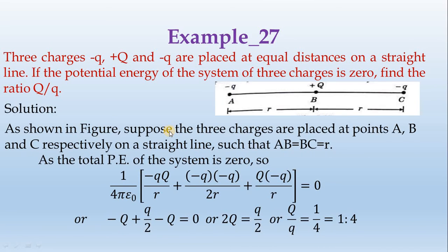As shown in the figure, suppose the three charges are placed at points A, B, C respectively on a straight line such that AB equals BC equals R.